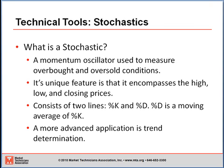What is a stochastic? The stochastic is a momentum oscillator used to measure overbought and oversold conditions. The great thing about the stochastic is that it encompasses the high, low, and closing price in the formula, so it encompasses all of market action. Many momentum oscillators and moving average systems only use the closing price. That is a defect in those systems, which the stochastic eliminates.